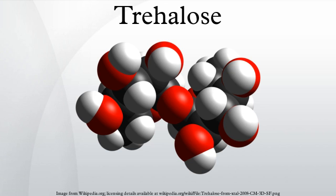Trehalose is a disaccharide formed by a 1,1-glucoside bond between two α-glucose units. Because trehalose is formed by the bonding of two reducing aldehyde groups, it has no capacity to participate in the Maillard reaction. There is an industrial process where trehalose is derived from cornstarch. There are at least three biological pathways for trehalose biosynthesis.